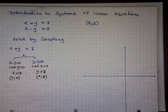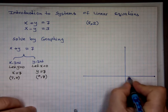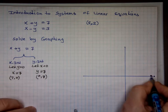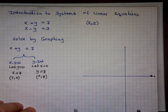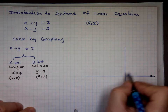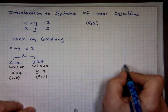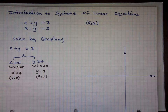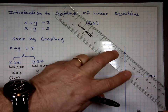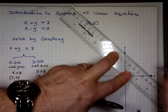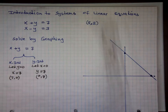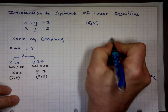Let's find these points: (7, 0) is right here, and (0, 7) is right here. It's nice to use graph paper. When I connect the two points, this is the graph of x plus y equals 7.